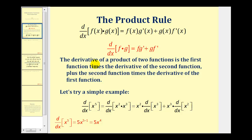The derivative of a product of two functions is the first function, which is f, times the derivative of the second function, which is g prime, plus the second function, which is g, times the derivative of the first function, which is f prime.